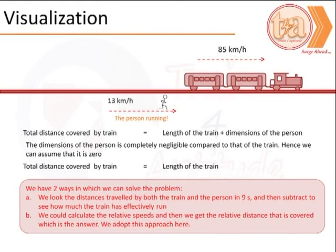The second approach is that we look at only the relative speed of the two objects, i.e., the train and the individual, and calculate the actual distance travelled using the relative speed approach. We would prefer doing it the second way.